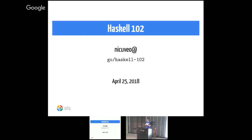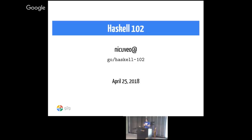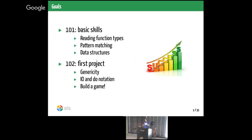I started 101 yesterday by saying the point of 101 was to help people get started — Haskell has a steep learning curve, and the point was to give everyone all the tools they need to write their own programs. If you have tried writing some Haskell since 101, you might have realized there are a few things still missing. The point of today is to finish what we started in 101 and do the tour of all things you need to know to be independent with Haskell. The codelab today is going to be a small command-line game, a small project you can improve and iterate on.